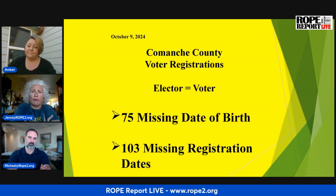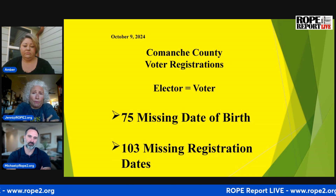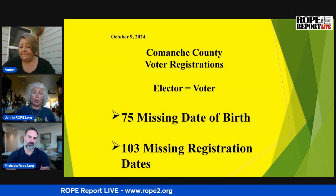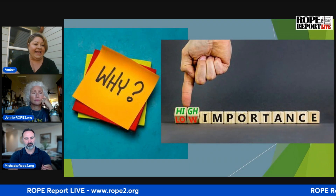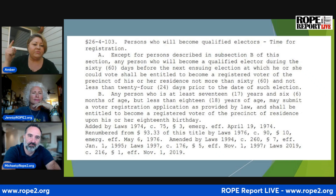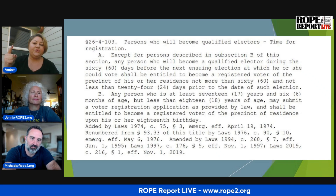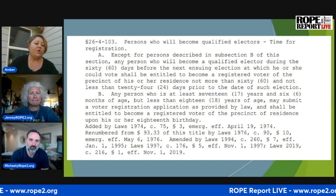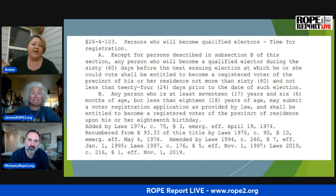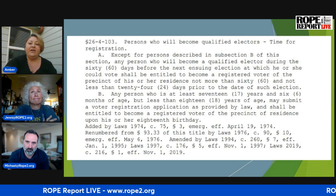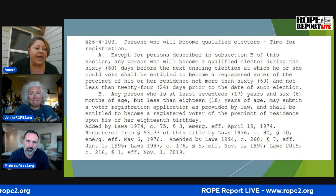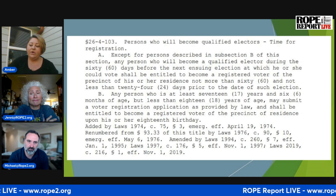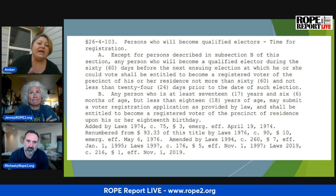For those of us in the cheap seats, let's go over that. I could be 16 — if there's no birth date, how do you know if I'm a qualified elector? That's the other part: a qualified elector. Oklahoma Statute 26-4-103 outlines persons who will become qualified electors based on age and registration date. We have 75 people in Comanche County with no date of birth and 103 individuals with no registration date.